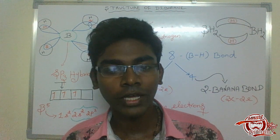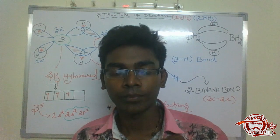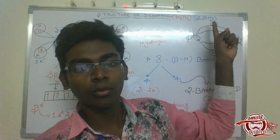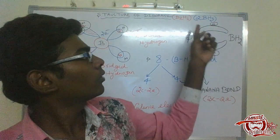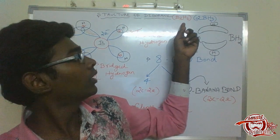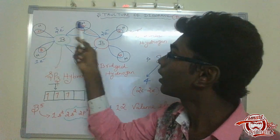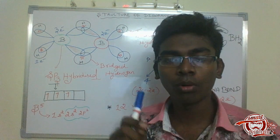Let's talk about the structure of Diborane. First, what is Borane? Borane is BH3. Diborane is B2H6. Look at the structure of B2H6 — two Borane is B2H6. Now, what is the atomic number?